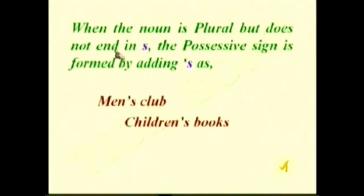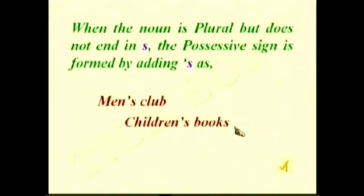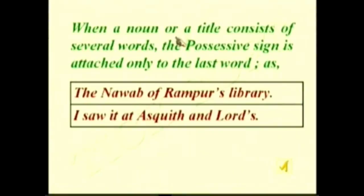When the noun is plural but does not end in S, the possessive sign is formed by adding apostrophe-S, as 'men's club,' 'children's books.' When a noun or title consists of several words, the possessive sign is attached only to the last word, as 'the Nawab of Rampur's library' — here we have added S to the word Rampur only, not Nawab.